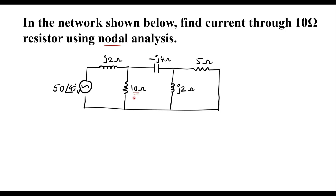As we know in node analysis, first we have to identify the nodes. So here we have one node, here we have one node, and here we have one node. By default, this will be the reference node and voltage at this node will be 0. Let me assume voltage at this node is V1, and voltage at this node is V2.